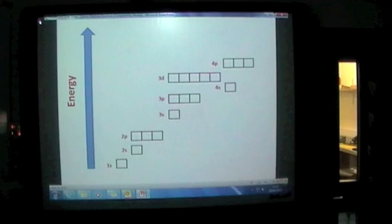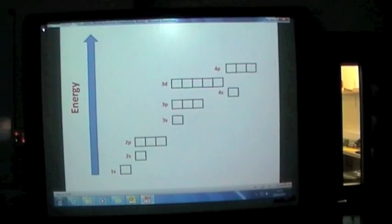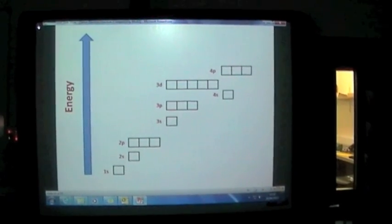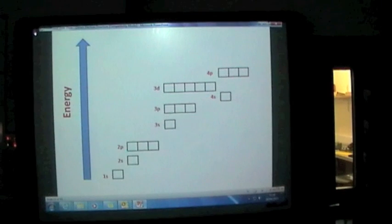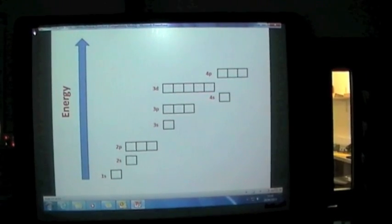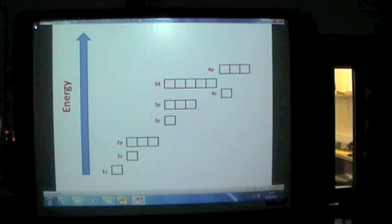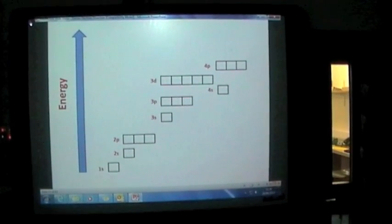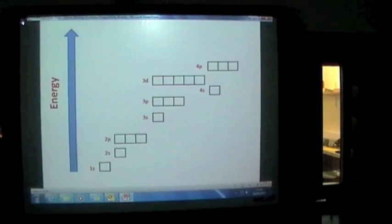Now we have established what the shells are made up from, we're going to look at the order in which the electrons actually go in. This diagram shows us the relative energy of all of those subshells. You can see the very lowest energy is the 1s subshell, followed by 2s, followed by 2p, and then we go to 3s.